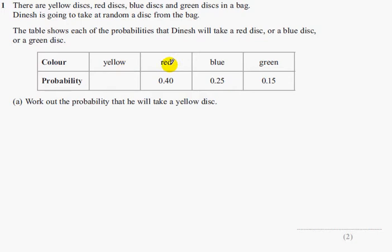On the top you've got colours: yellow, red, blue and green. On the bottom you've got the probabilities, so the yellow probability is missing. Red probability is 0.4, blue is 0.25 and green is 0.15. Part A says work out the probability that he will take a yellow disc.